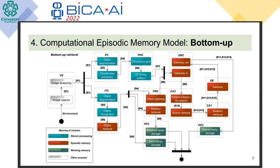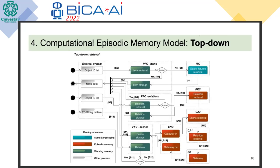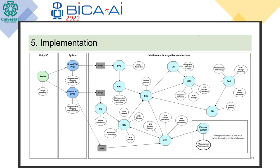Then we have the top-down approach. In the top-down approach the agent is actively trying to recollect information that is not part of what it is currently perceiving from the environment. We have an external input that starts in working memory, and then we use it as a keyword to recollect related information.